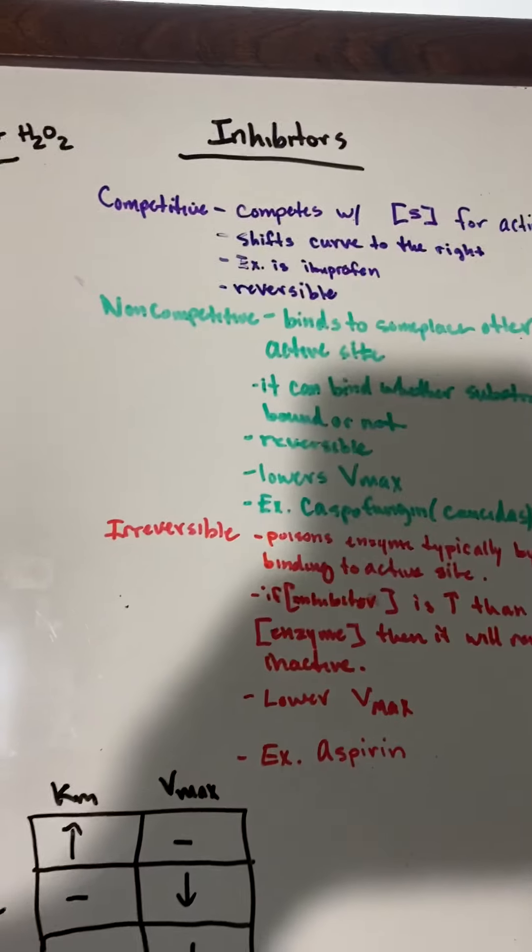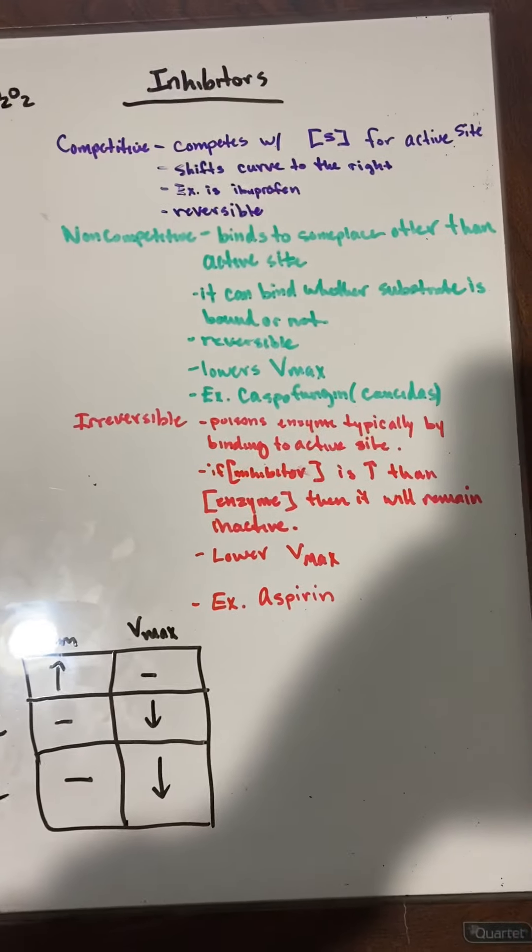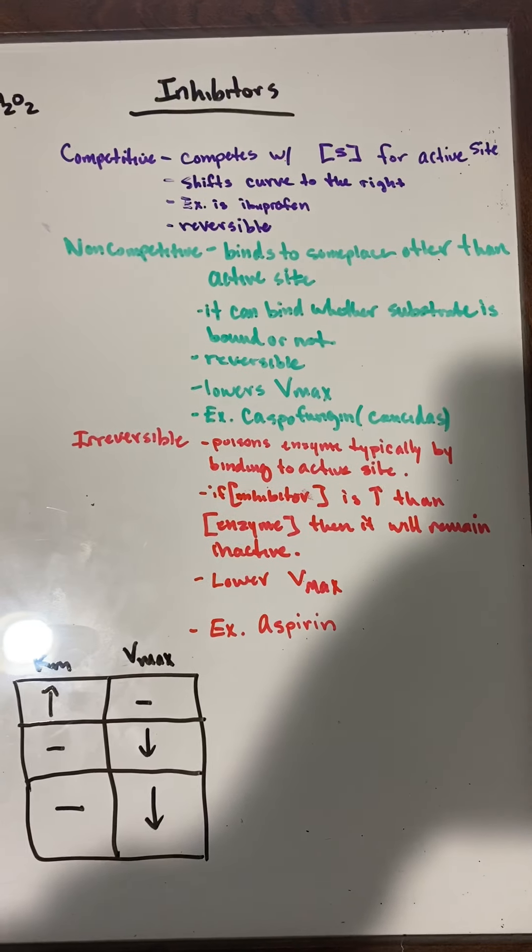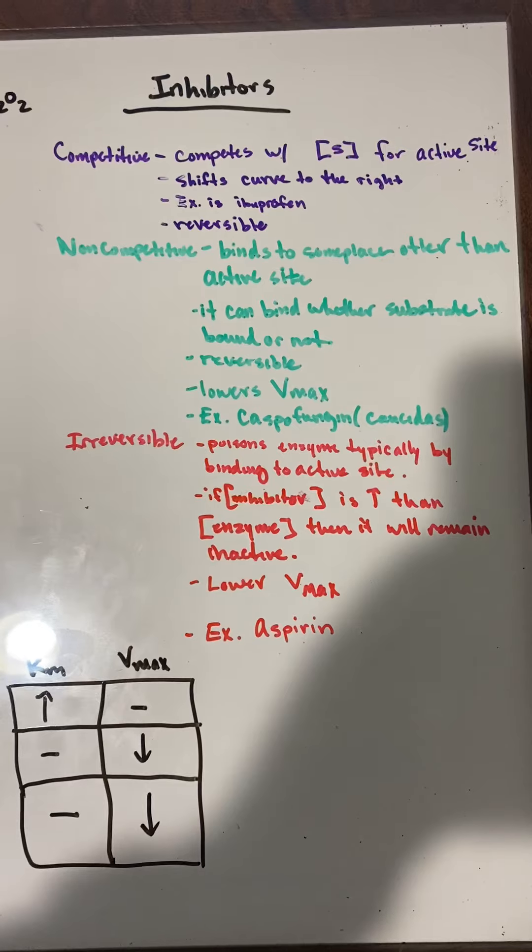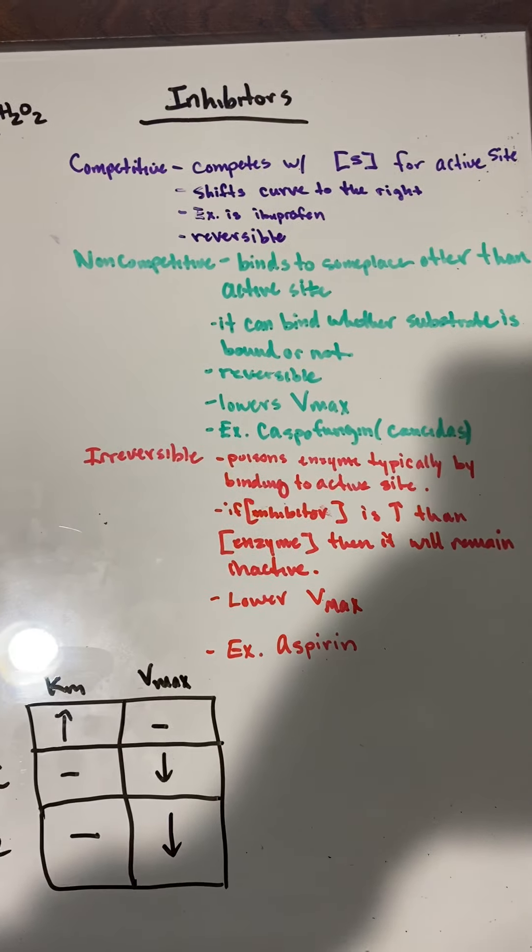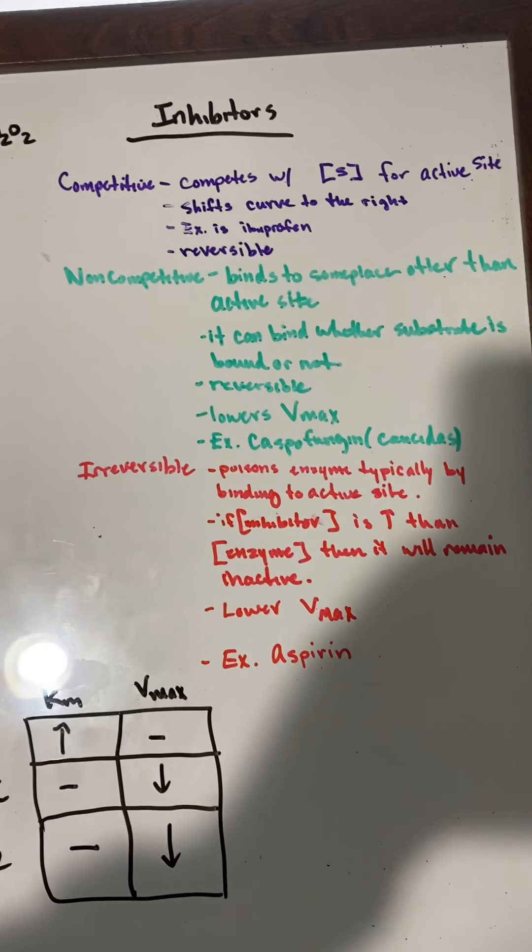Now for inhibitors. Competitive inhibitors compete with the substrate for the active site. It shifts the curve to the right, and the example we were given was ibuprofen. It's reversible.